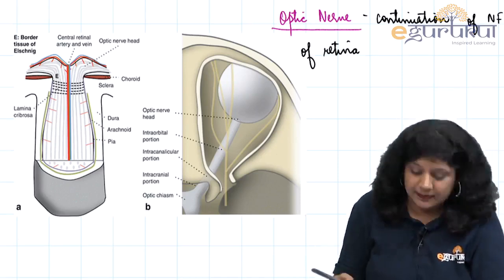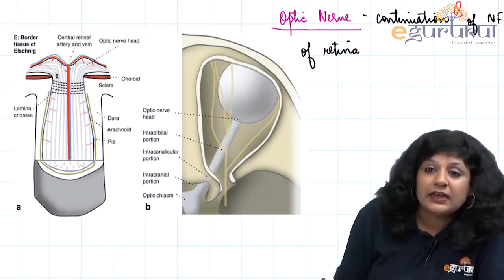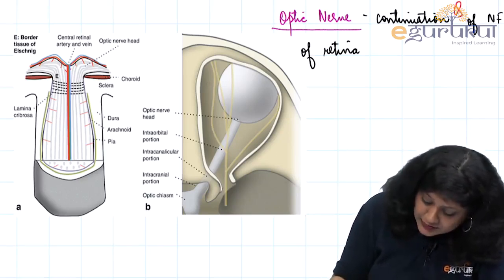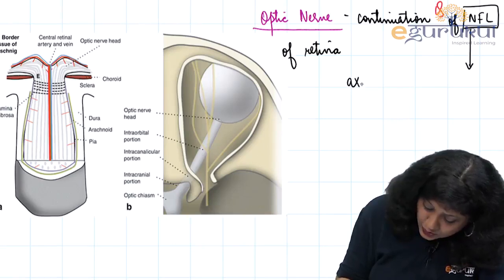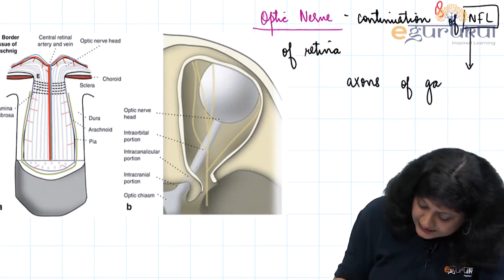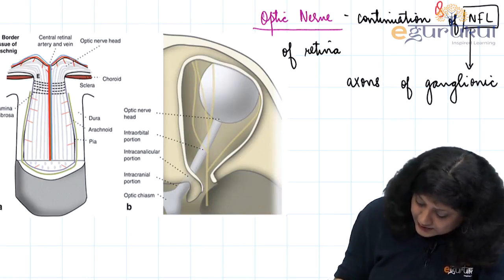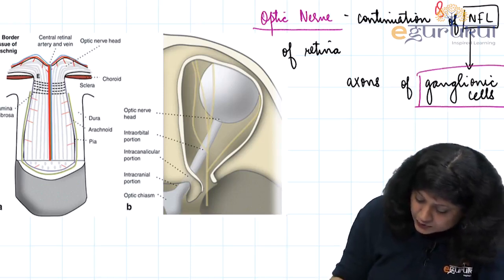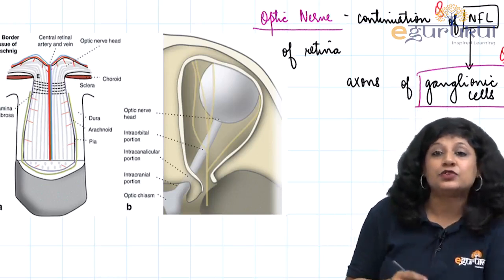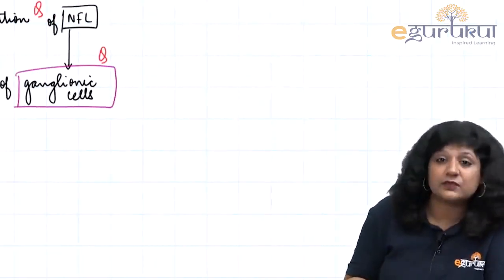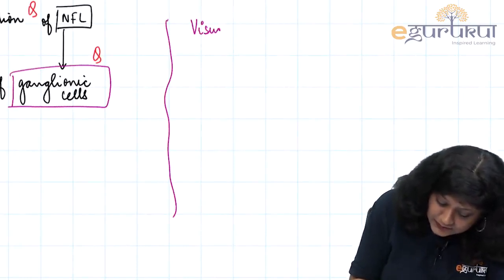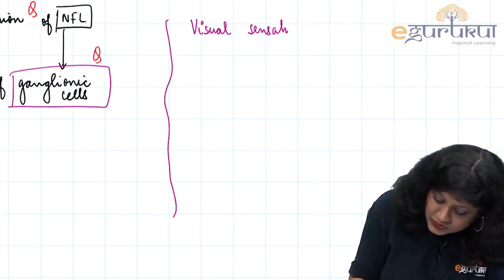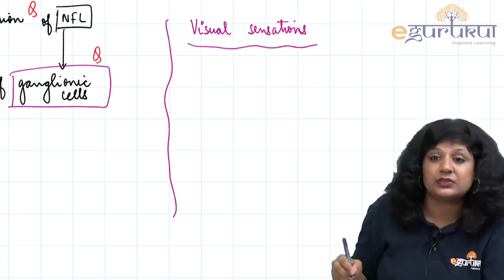These are presumptive MCQs. The nerve fiber layer of the retina actually contains the axons of the ganglionic cells. This is another important point — it contains the axons of the ganglionic cells. Which order neurons are these ganglionic cells? There is an update about this, so it becomes an important thing.